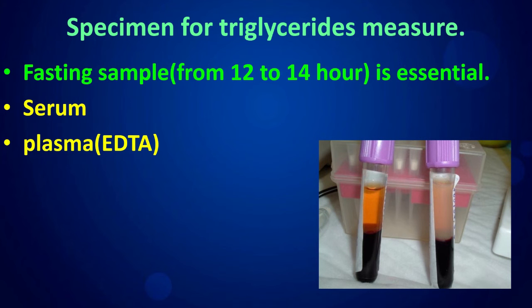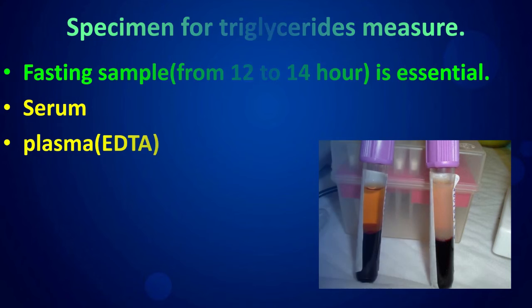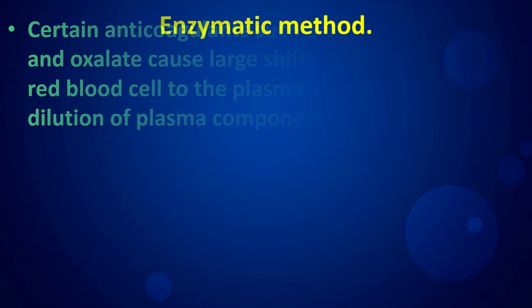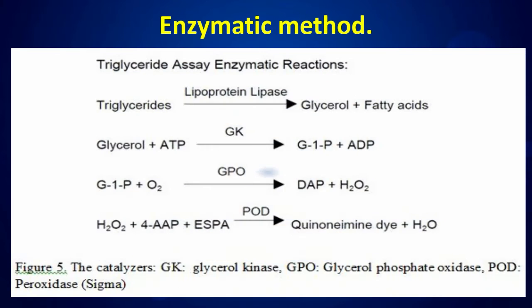Serum or plasma EDTA is used as specimen. Certain anticoagulants such as fluorides, citrates, and oxalate cause large shifts of water from the red blood cells to the plasma, which results in the dilution of plasma components. This is the principle behind the enzymatic method for triglyceride measurement.